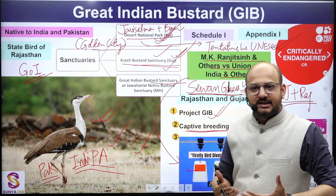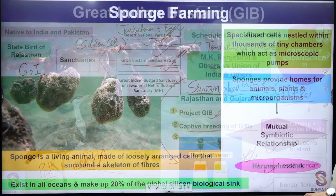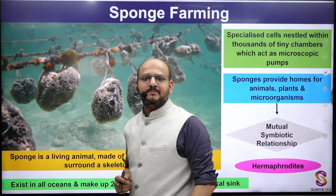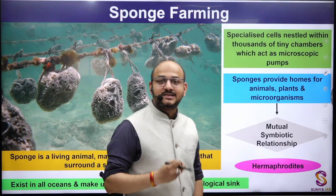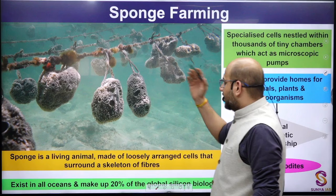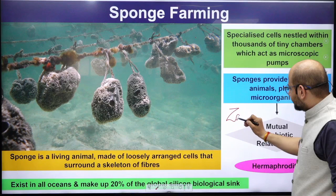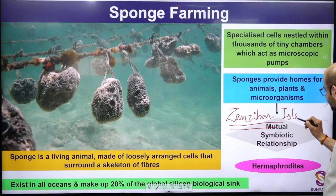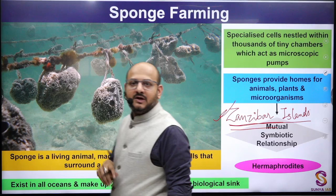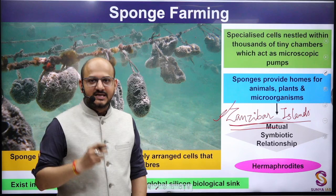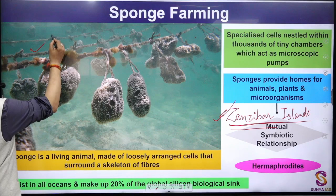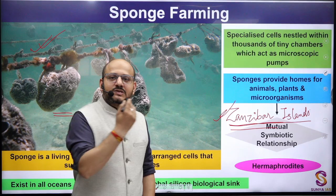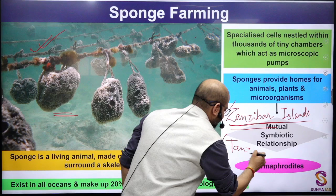Next is sponge farming. Agriculture as a subject finds concurrence in economic development and sustainable agriculture in environment. It is in the news because in Zanzibar — a village habitation on islands — the women were previously doing seaweed farming, but due to climate change impacts they had to shift to sponge farming. Zanzibar Islands are on the east coast of Tanzania, in the Indian Ocean.